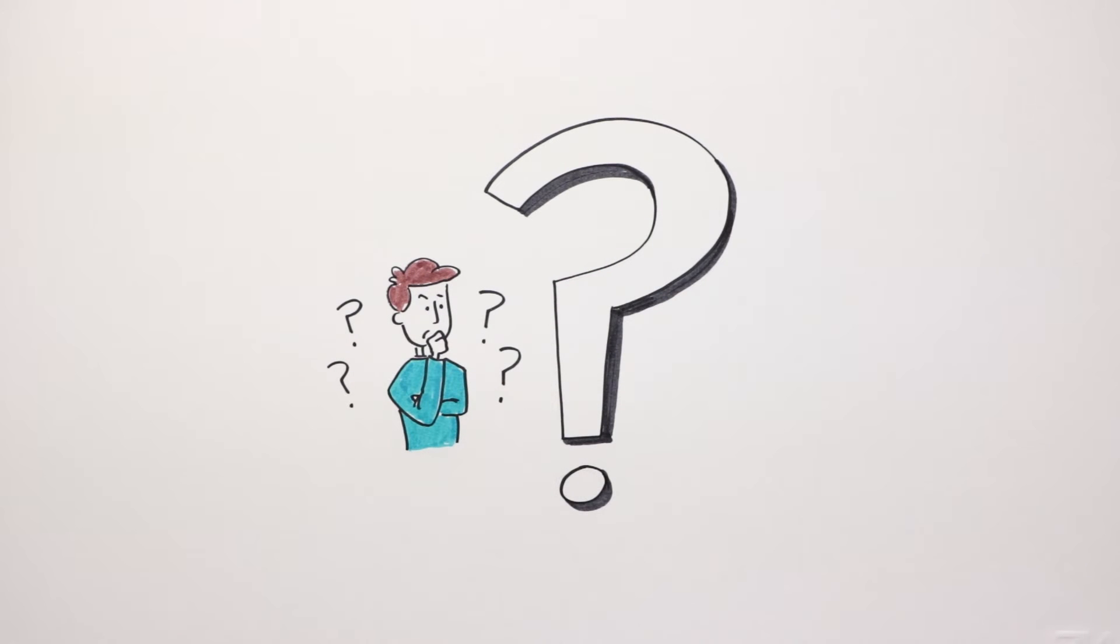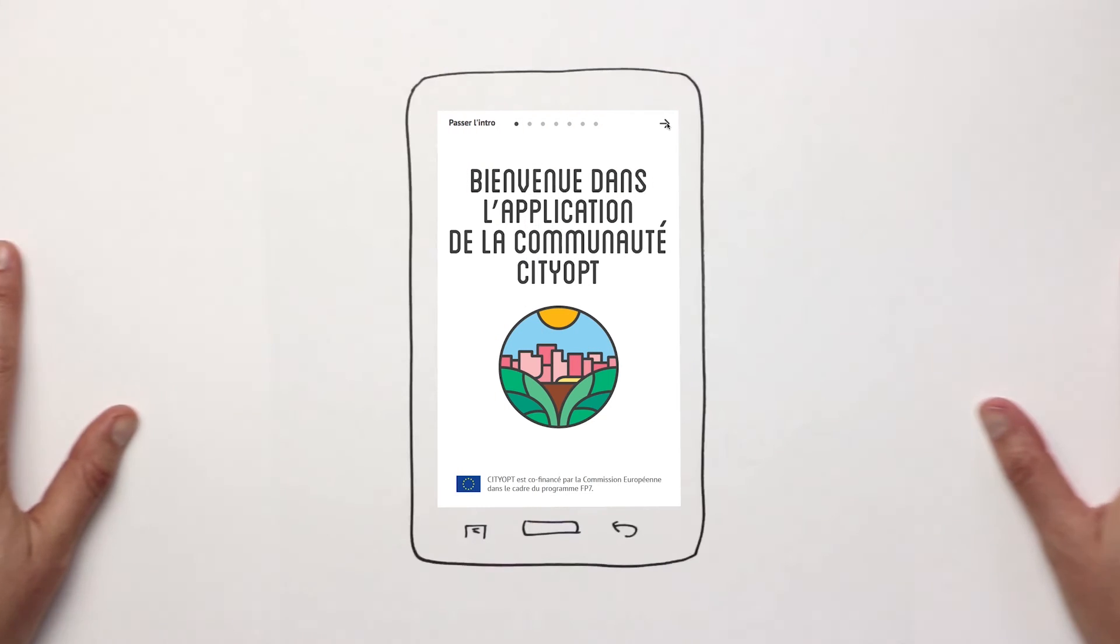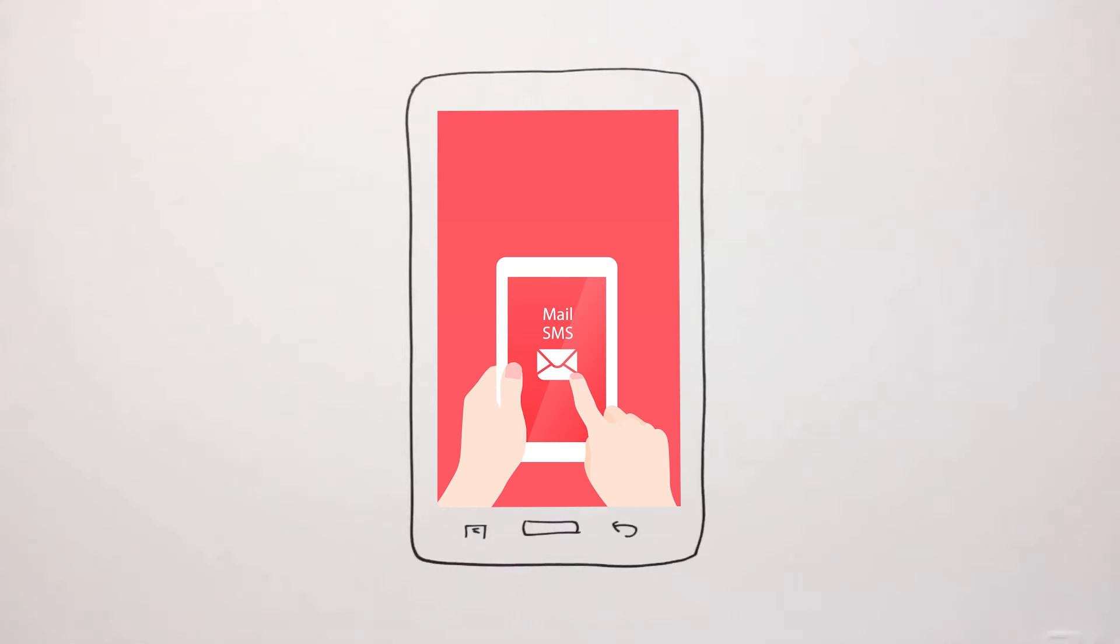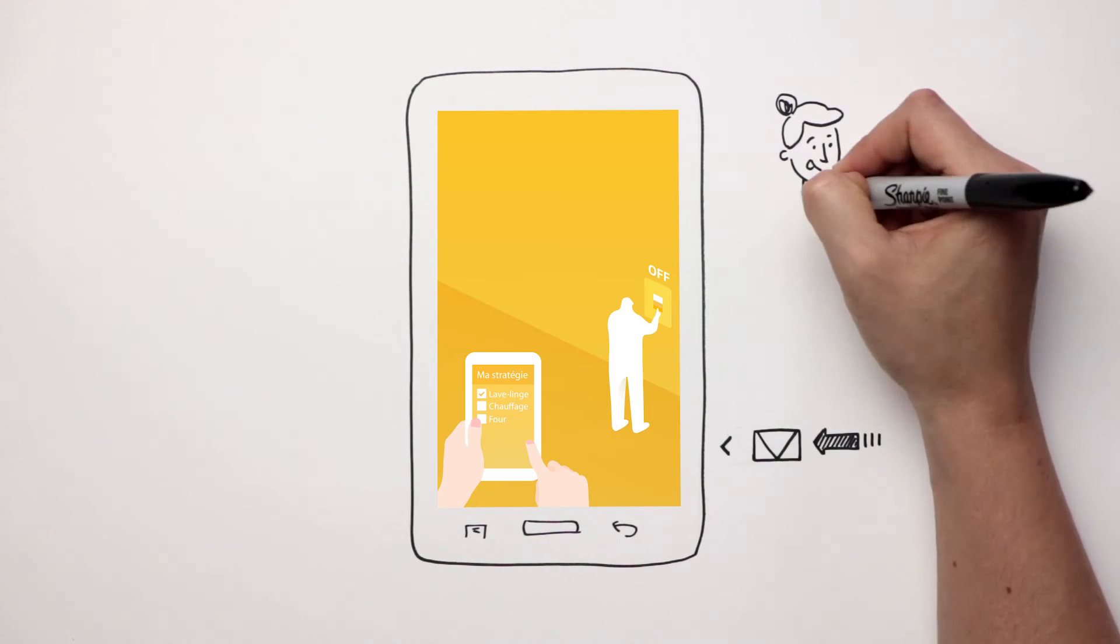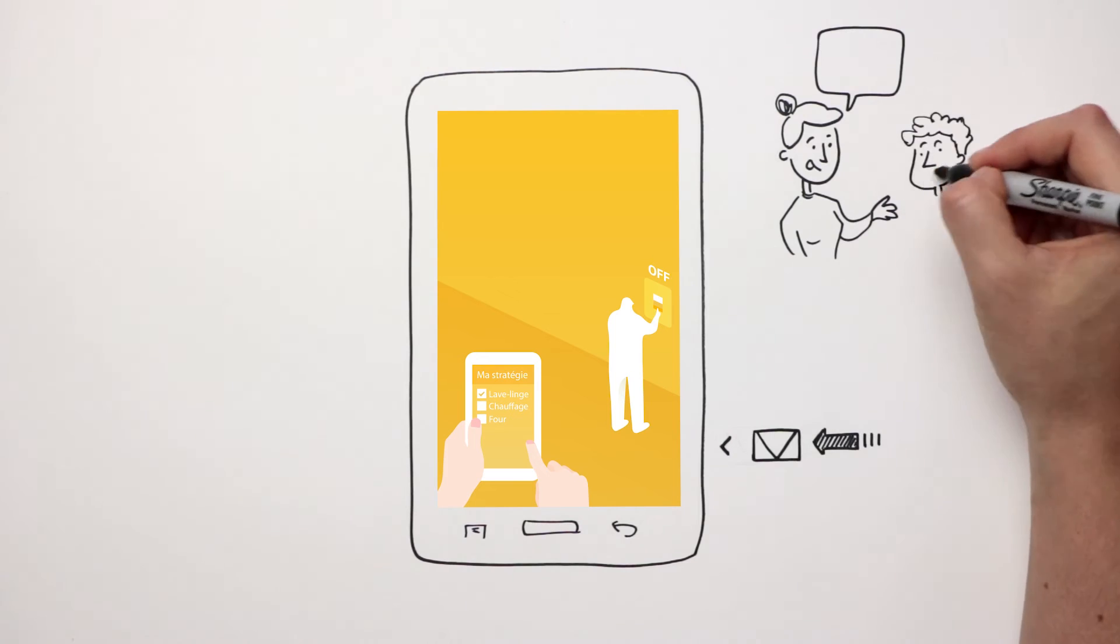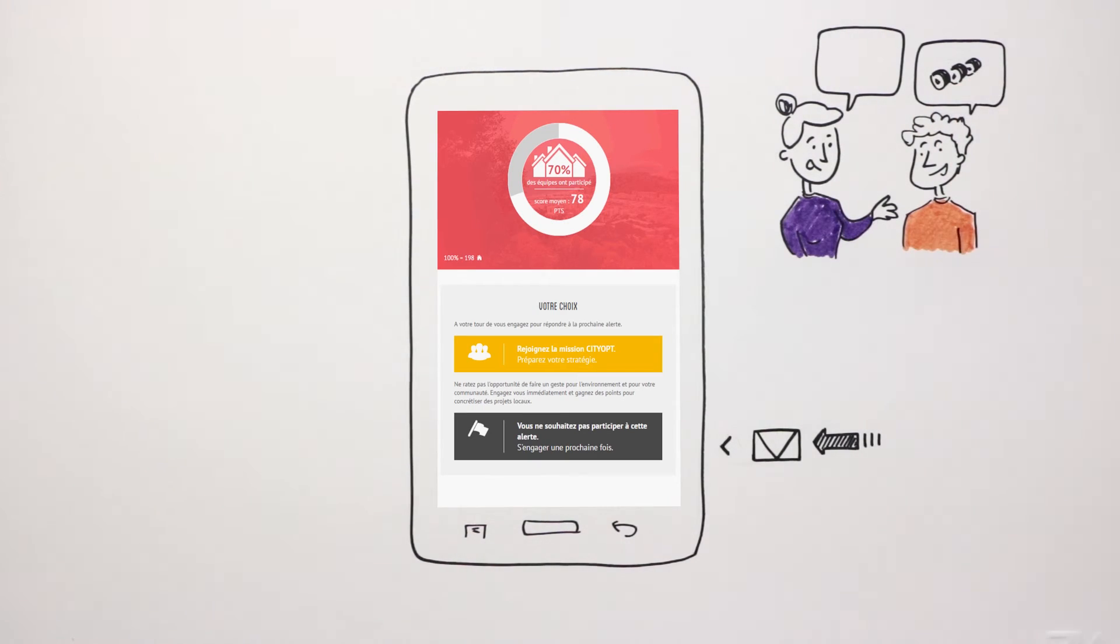So, how does the app work? During the 25 coldest days in winter, the application alerted participants the day before each energy consumption peak. Participants were invited to join in the CityOpt mission and to devise their own household strategy to reduce the electricity consumption.